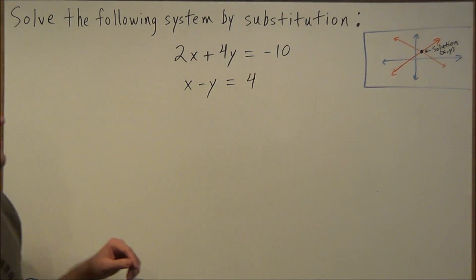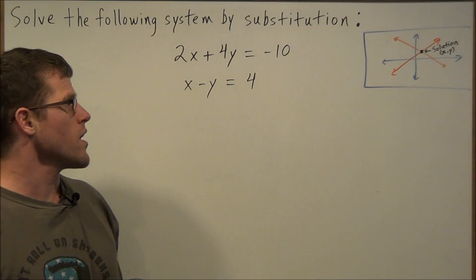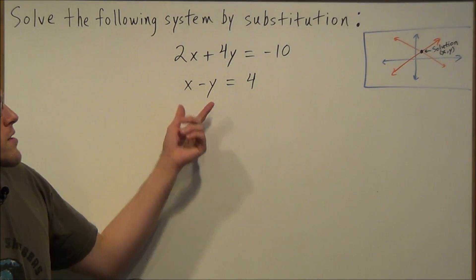So we have solved the following system by substitution. We have 2x plus 4y equals negative 10, and we have x minus y equals 4.